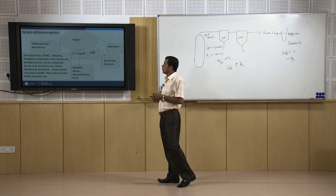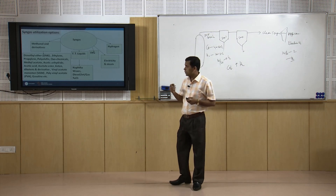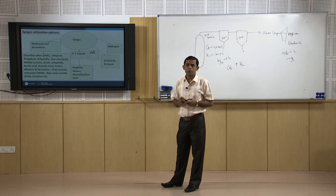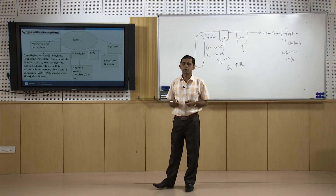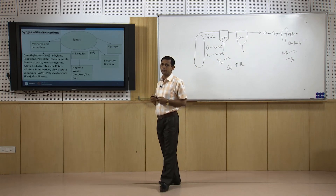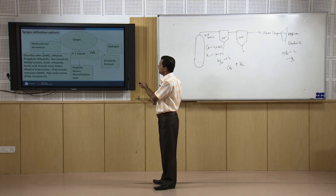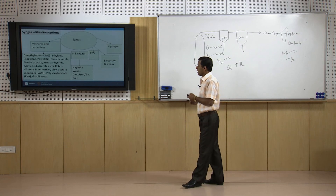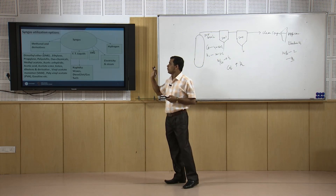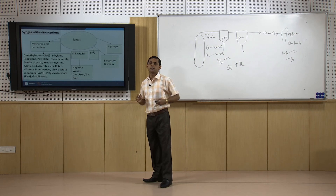From syngas we can get hydrogen, electricity, SNG, Fischer-Tropsch fuels like diesel and petrol, methanol, and many chemicals. Once we get methanol, that can be converted to DME and then to many other chemicals such as ethylene, propylene, polyolefin, oxochemicals, methyl acetate, acetic anhydride, and others. We can utilize syngas in different routes; we will be discussing some important ones: electricity, SNG, hydrogen, FT and methanol synthesis, and DME synthesis.